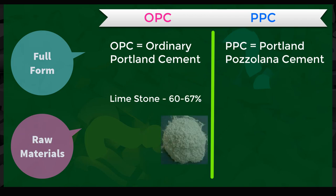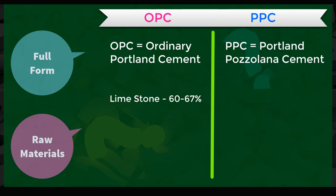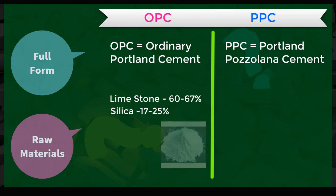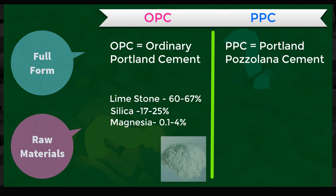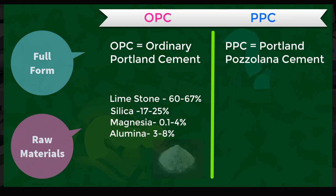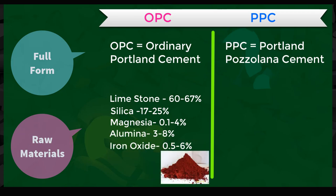For OPC, limestone is about 60 to 67%, silica is about 17 to 25%, magnesia is 0.1 to 4%, aluminium is 3 to 8%, oxides of iron is 0.5 to 6%, and gypsum in a small proportion.